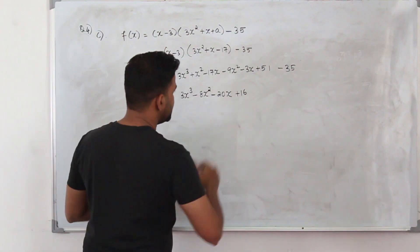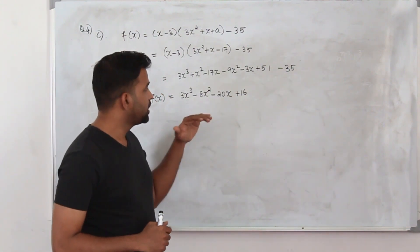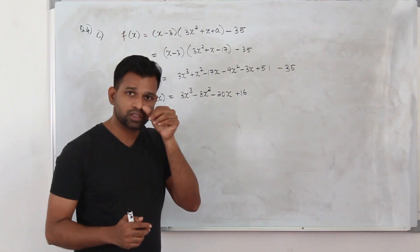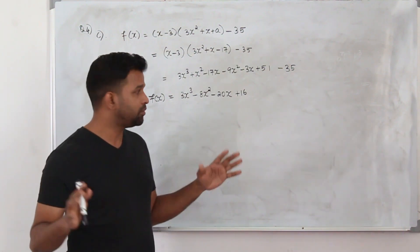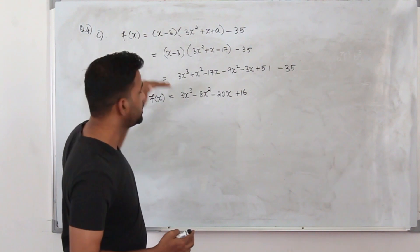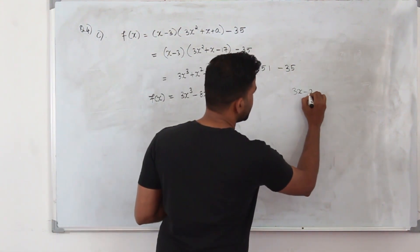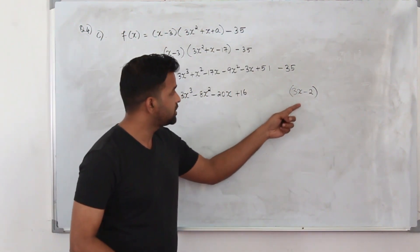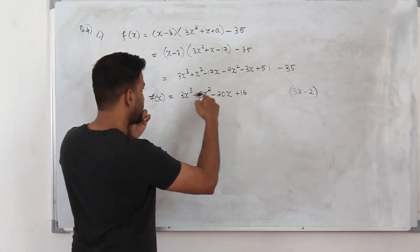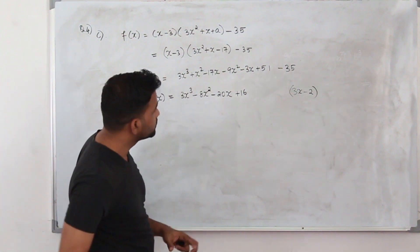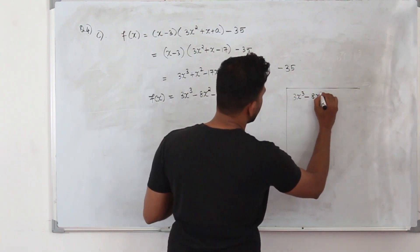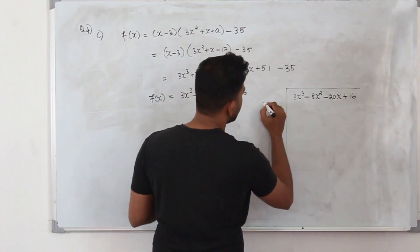Now we need to fully factorize this cubic function. For a cubic with no known factor, factorization would be very difficult. But from Part b we already know that (3x minus 2) is a factor. So we use this factor and the long division method to divide 3x³ minus 8x² minus 20x plus 16 by (3x minus 2).